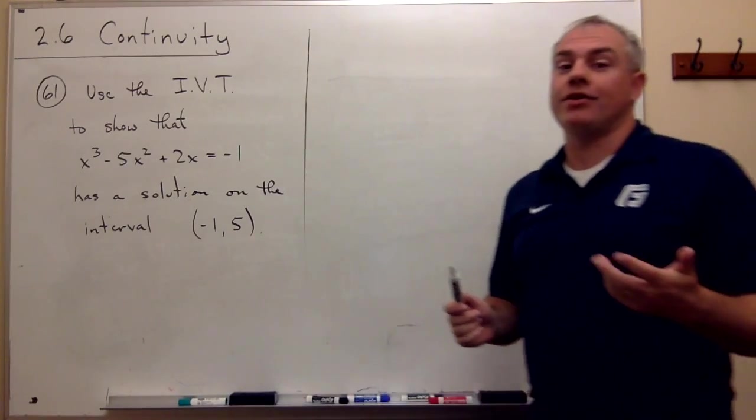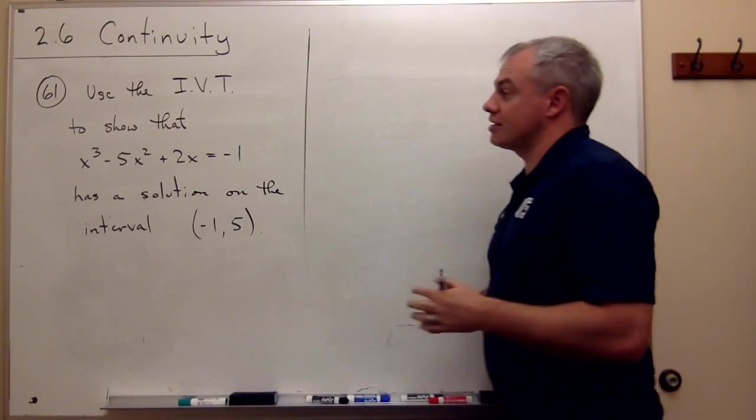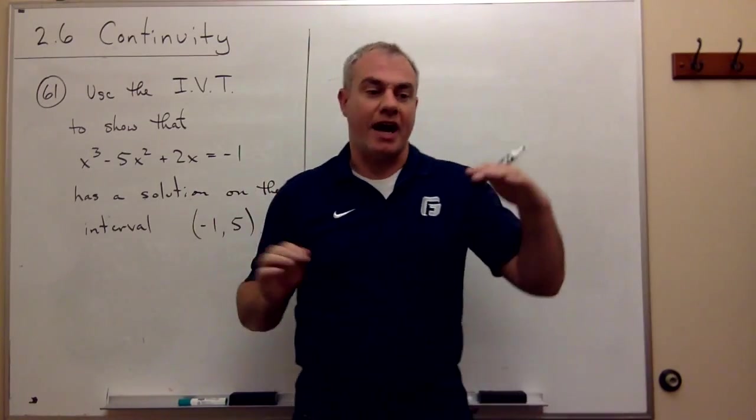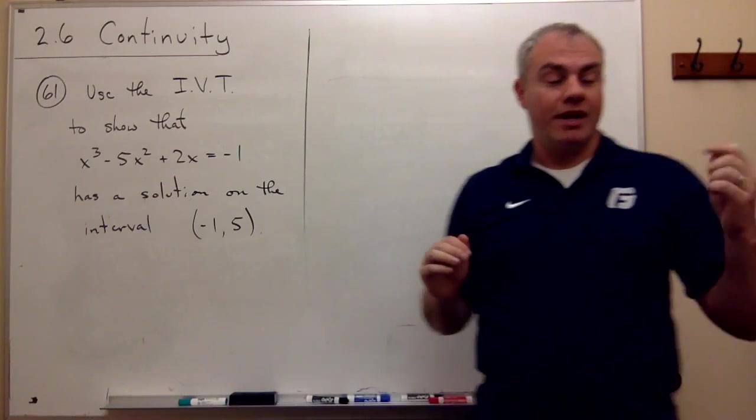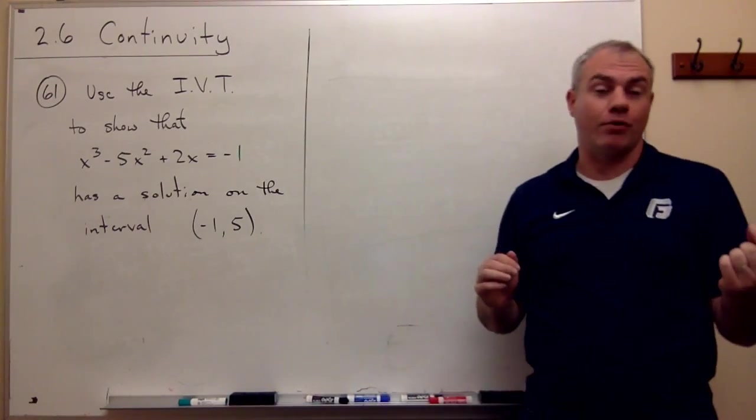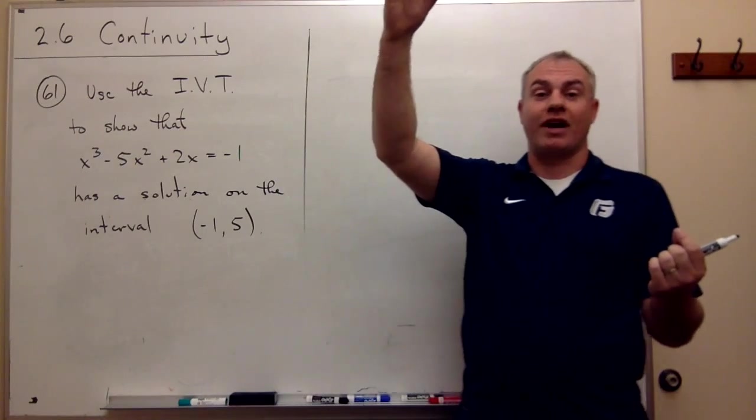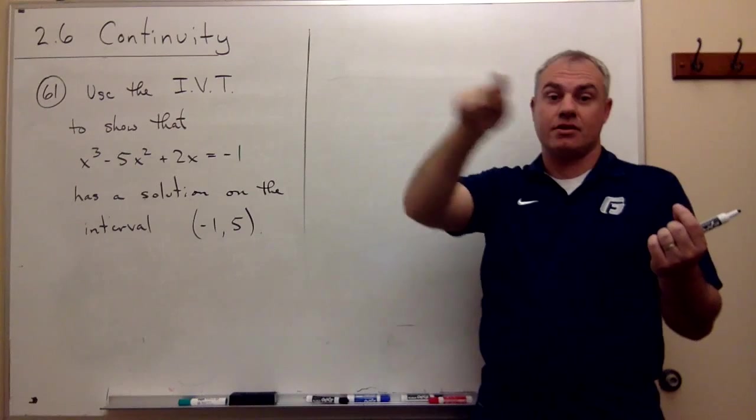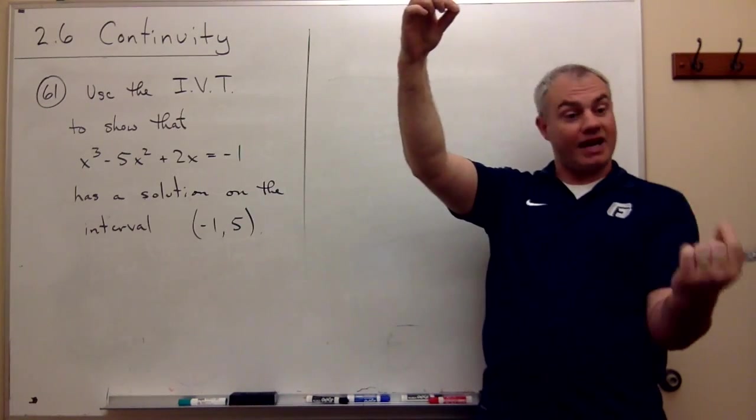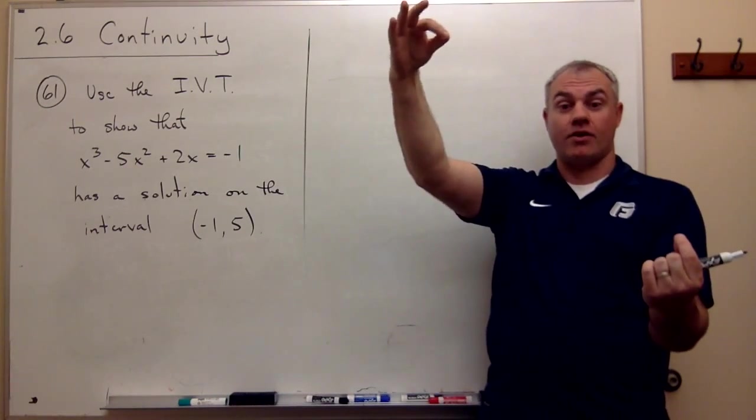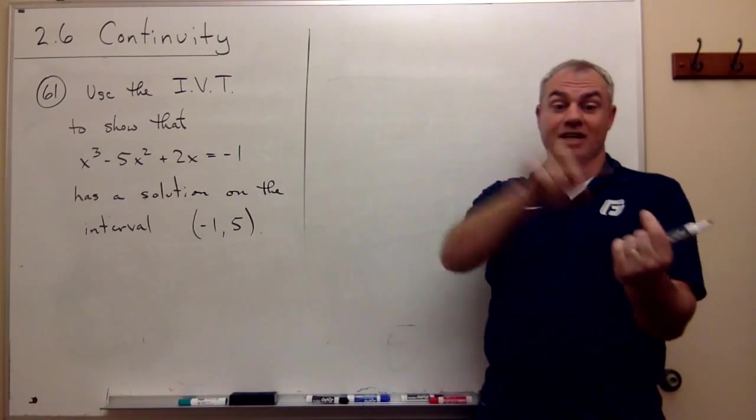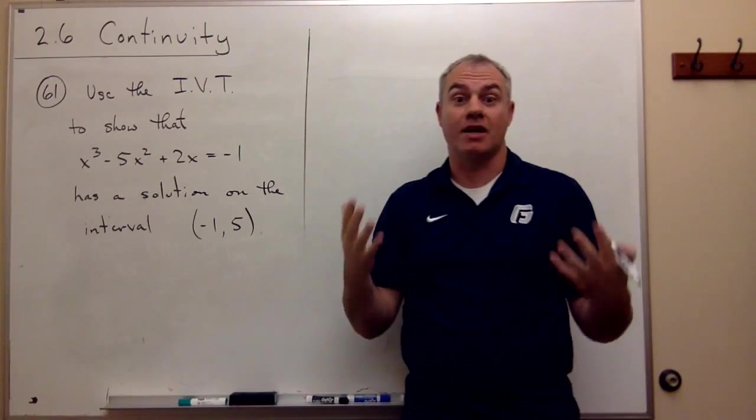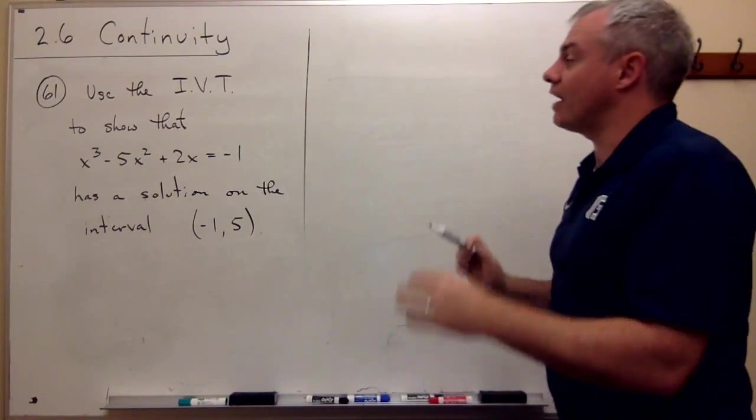So the intermediate value theorem is a really cool theorem that tells us that if I have a negative functional value at point A and a positive functional value at point B, and I know that the function is continuous between those two points, then somewhere in between that negative value and that positive value, I must cross through 0. I just have to because it's continuous. I connect the dots, and somewhere in between it must hit 0. That's the intermediate value theorem, but this isn't really in the form of the intermediate value theorem.